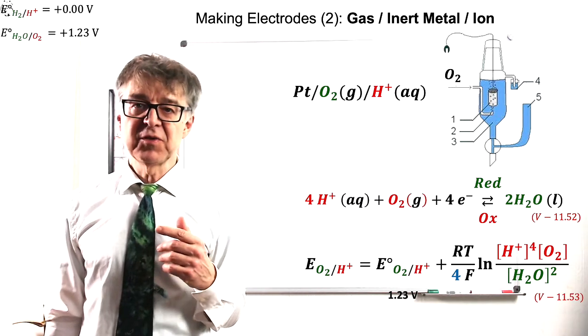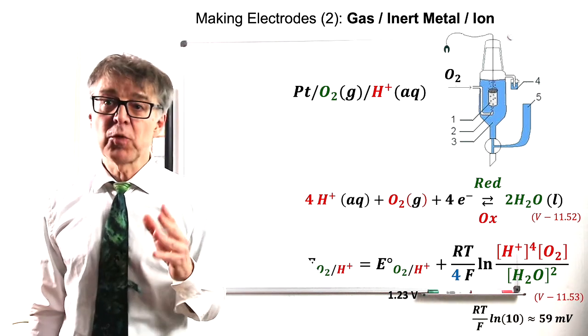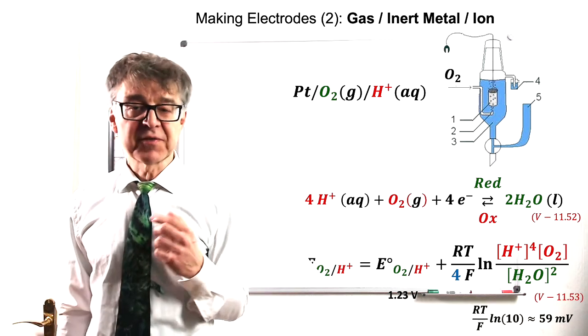The potential of the oxygen electrode is not strongly affected by pH. A change of one unit on the pH scale results in a potential change of 59 mV.